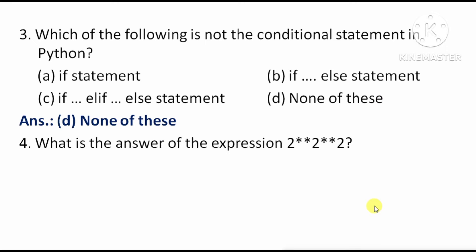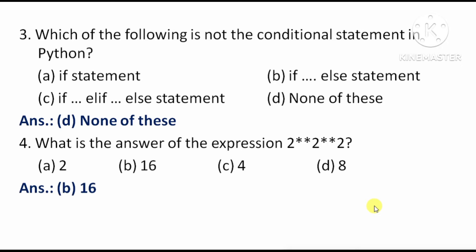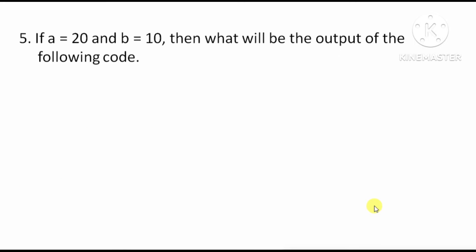Next question: what is the answer of the expression 2**2**2? Option A: 2, Option B: 16, Option C: 4, Option D: 8. The right answer is Option B: 16. This expression means 2 to the power of (2 to the power of 2).